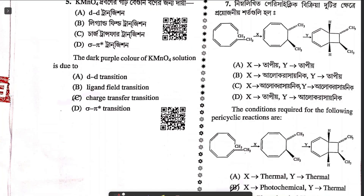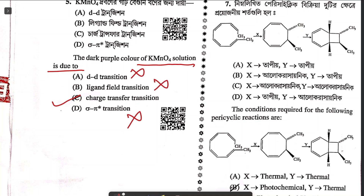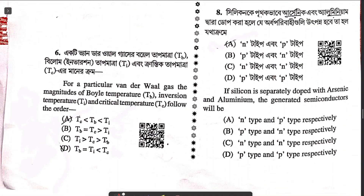Question five says the dark purple color of potassium permanganate solution is due to what. Since it is a d5 system, there is no d–d transition and no ligand field transition. The only possible answer is charge transfer transition.